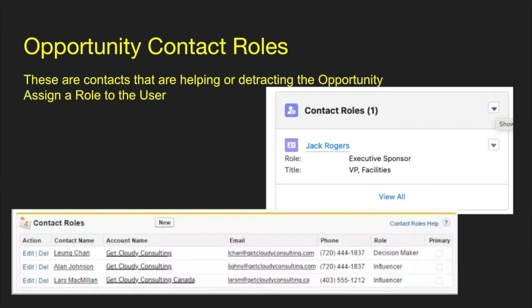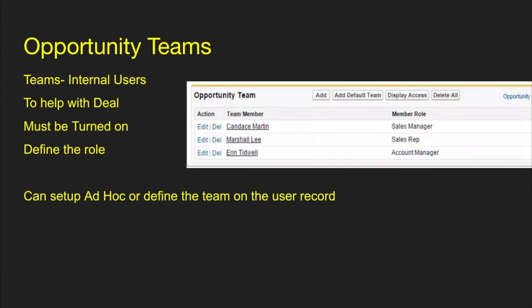There are also opportunity contact roles. On every opportunity, you can add contact roles — these are people typically helping with your opportunities. You can also list people who may be a detractor or not helping the deal out. Contact roles do not have to be part of the account tied to the opportunity; they can be anyone in the system. You can also set up opportunity teams — these are all internal users within your org who are Salesforce users there to help you with the deal. You must turn this on, and you can define the role and their access as well.